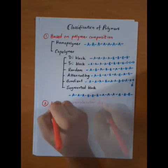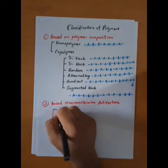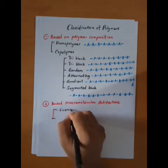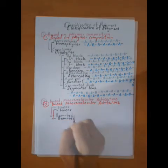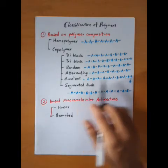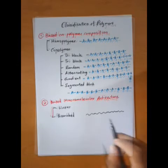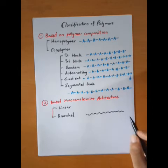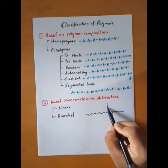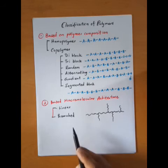The next classification is based on macromolecular architecture. Here we have linear and branched polymers. Linear polymers simply have a linear polymer chain. Branched polymers have secondary polymer chains connected to a primary backbone chain.